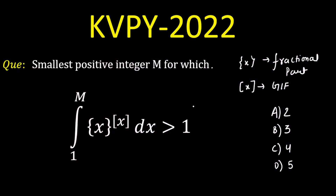Today we're going to solve a question on integration. The question is: find the smallest positive integer M for which the integral from 1 to M of the fractional part of x raised to the power of gif (floor function) of x dx should be greater than 1. The options given are 2, 3, 4, and 5.